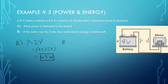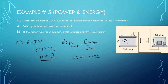Now this part might be a little bit more confusing. It says if the motor runs for 3 minutes, how much electric energy is delivered? Power is equal to the amount of energy used over a given period of time. We know 4.5 watts of power. We want to find how much energy is used in 3 minutes, which is also equal to 180 seconds — make sure it's in seconds because watts involves seconds. So energy is 4.5 times 180, and we get 810 joules.